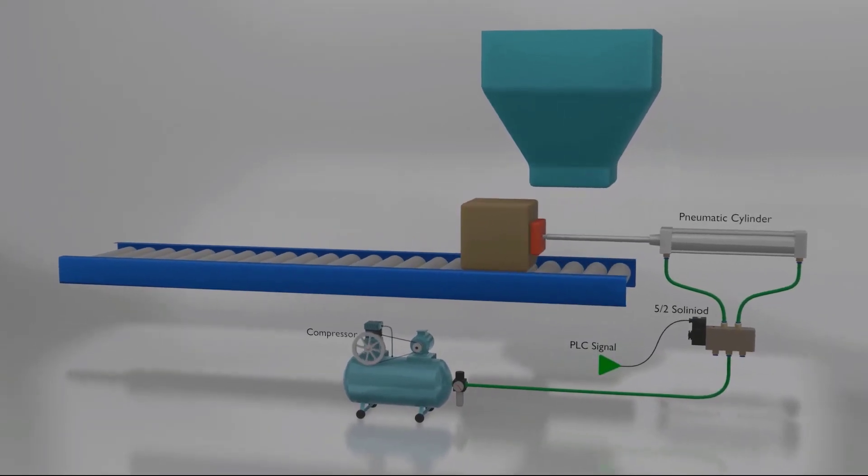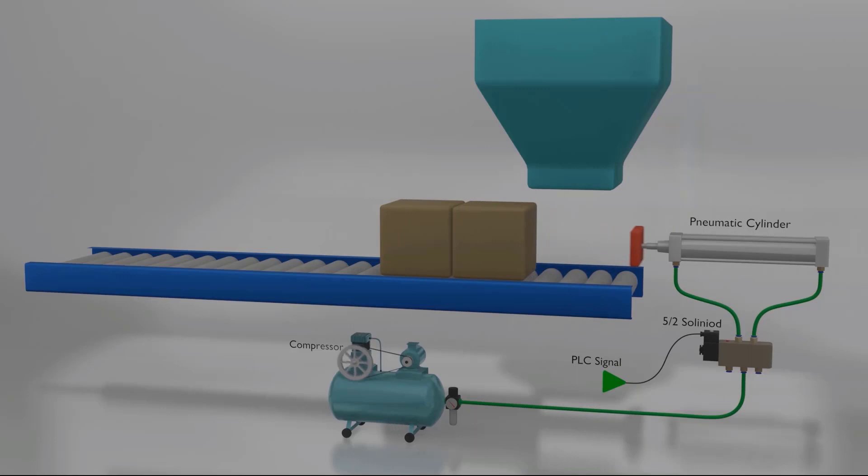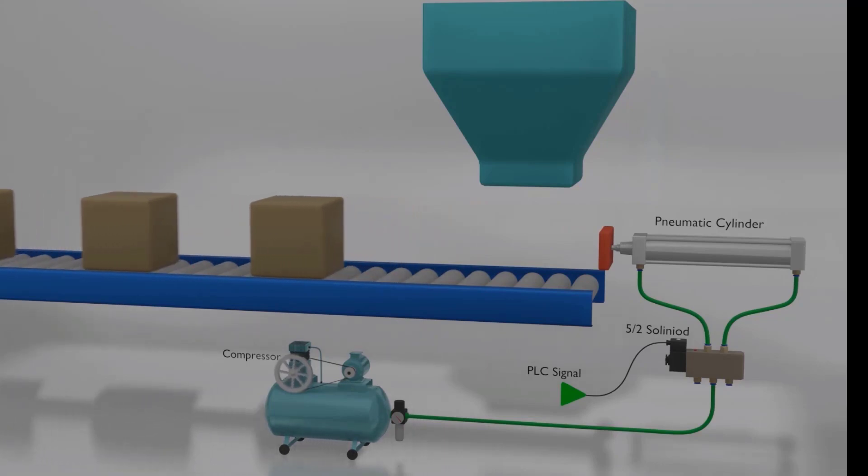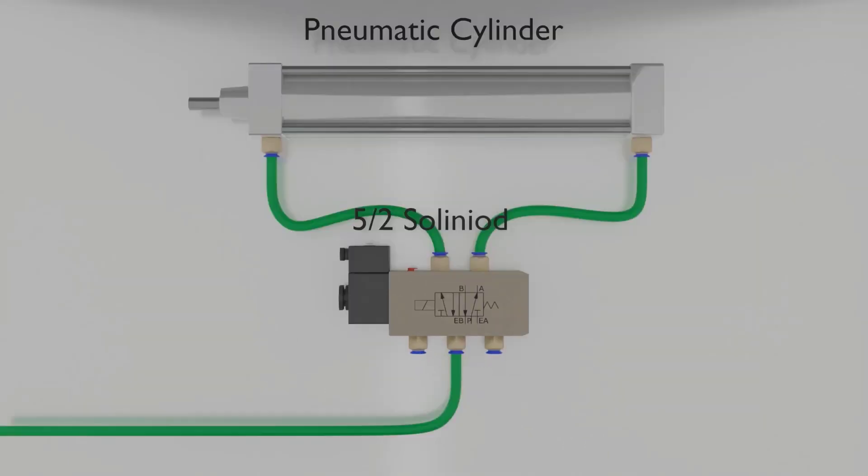If you visit any manufacturing industry, you will find pneumatic cylinders moving forward and in a reverse direction, creating a linear motion. These cylinders are called linear actuators. Pneumatic valves are responsible for controlling this linear motion of the cylinder.